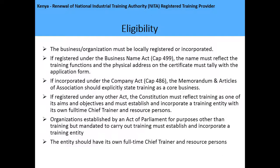If you are incorporated under the Company Act, the Memorandum and Articles of Association should explicitly state that training is a core business of your company. And if you are registered under any other Act, the Constitution must reflect training as one of its aims and objectives, and you must establish and incorporate a training entity with its own full-time chief trainer and resource persons.